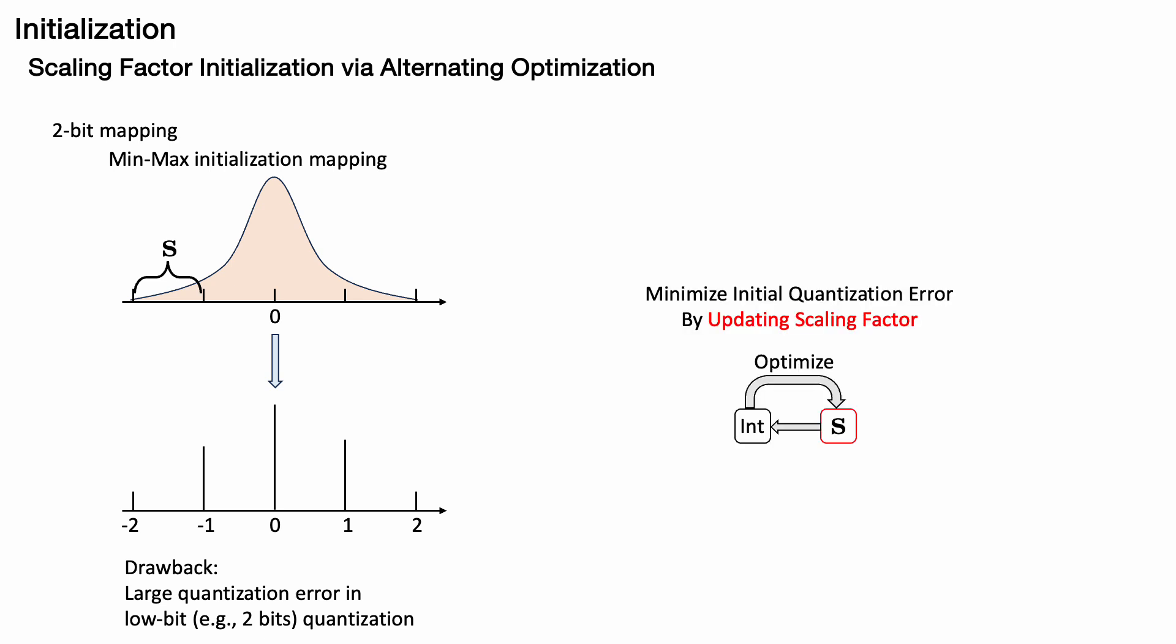Therefore, we propose using alternating optimization on the scaling factor to minimize quantization error. In each iterative step, we adjust the scaling factors and calculate the corresponding integer value. Throughout our experiments, we optimize the scaling factor through 10 steps to achieve convergence.